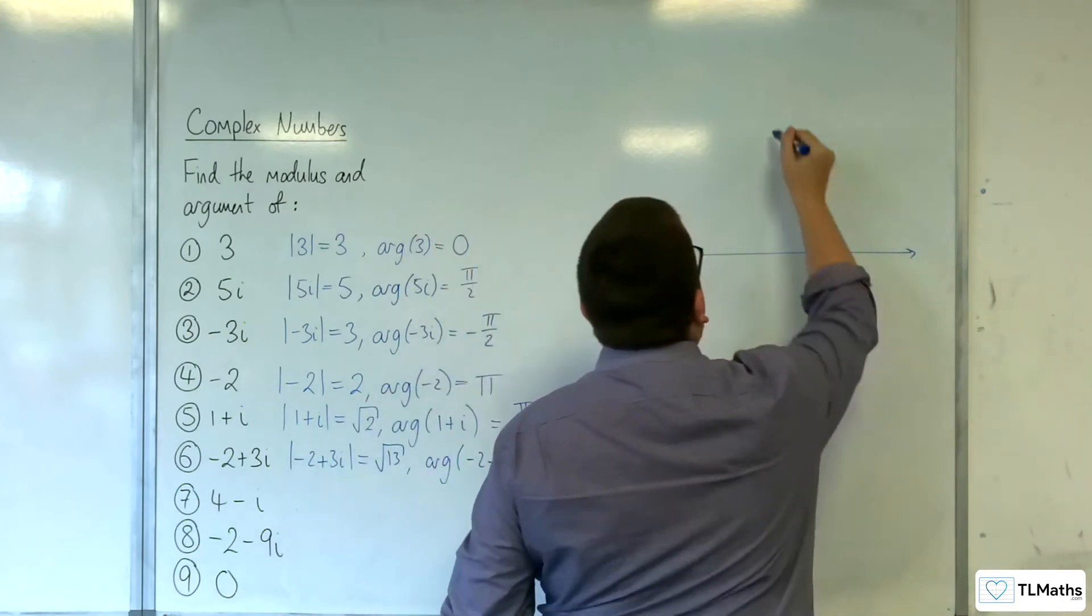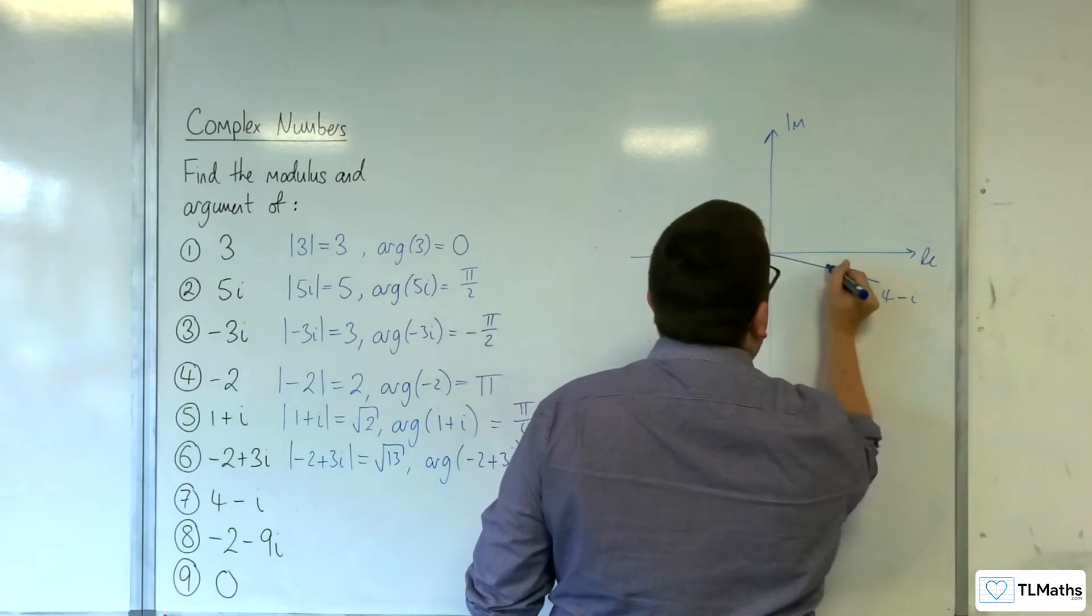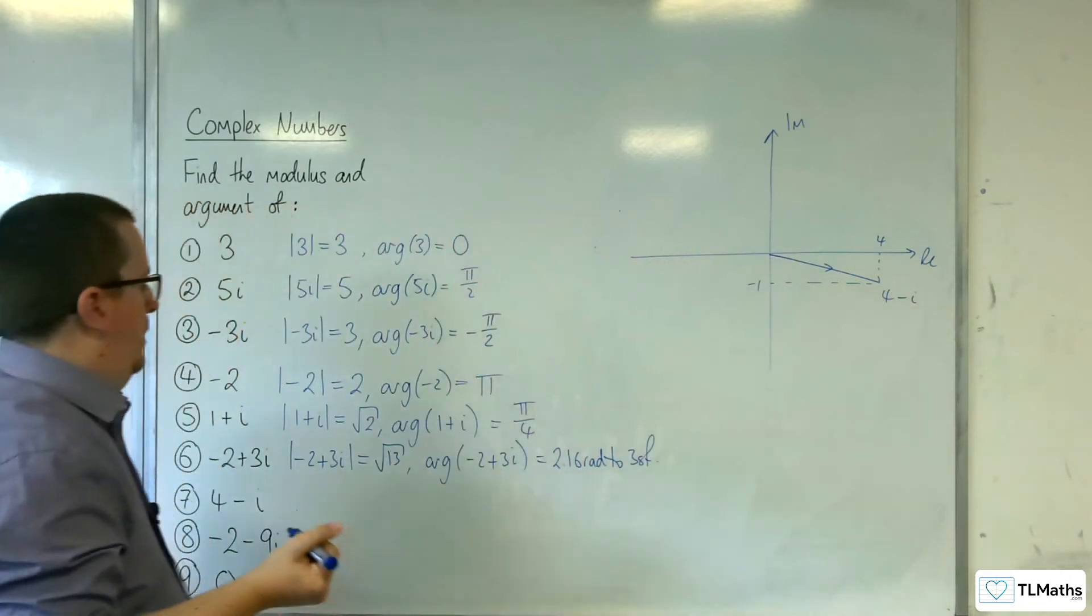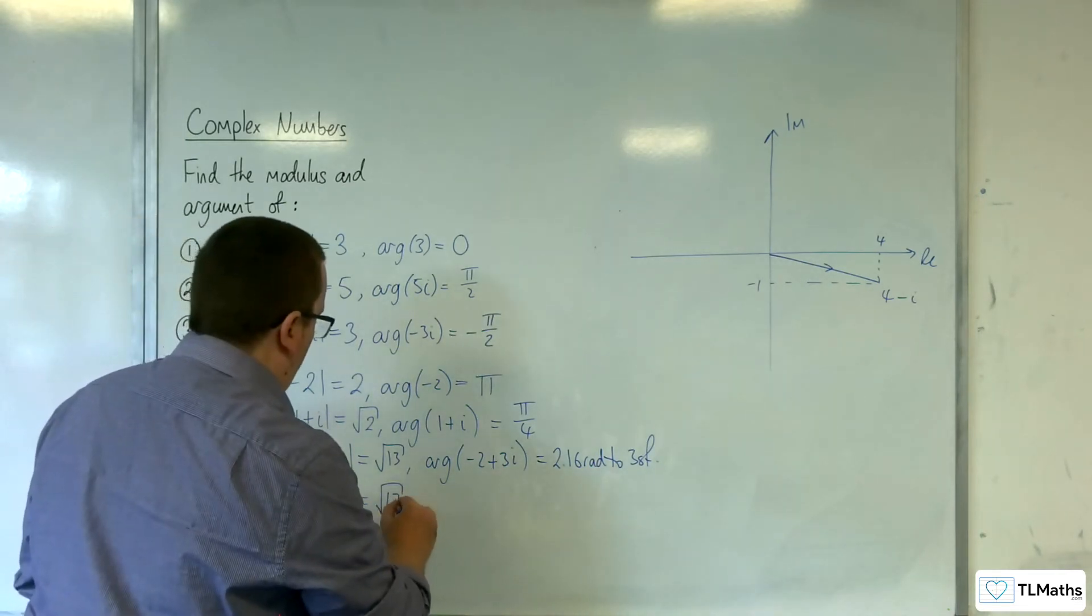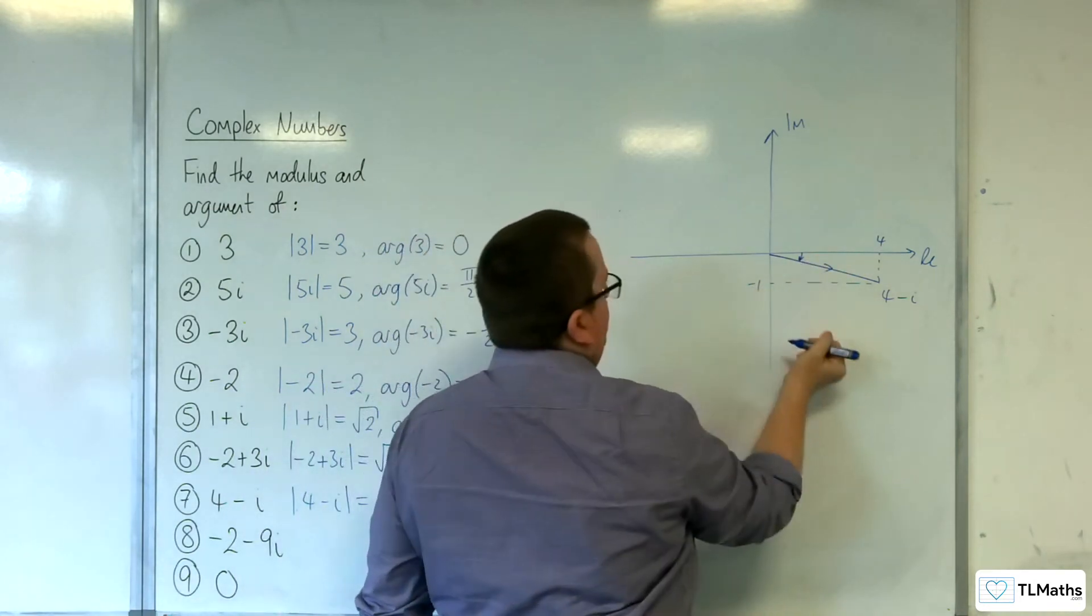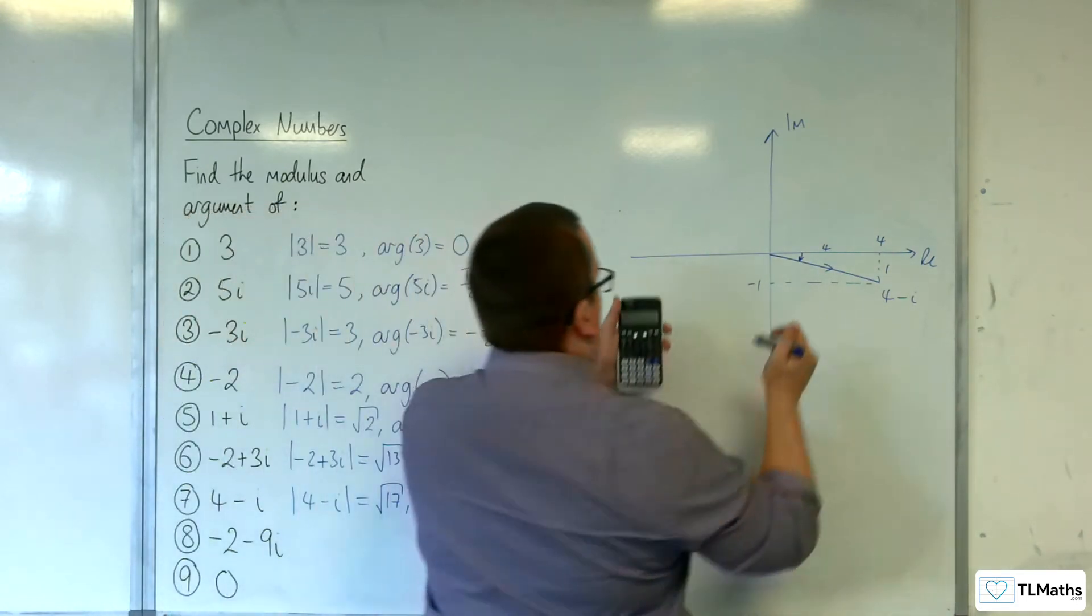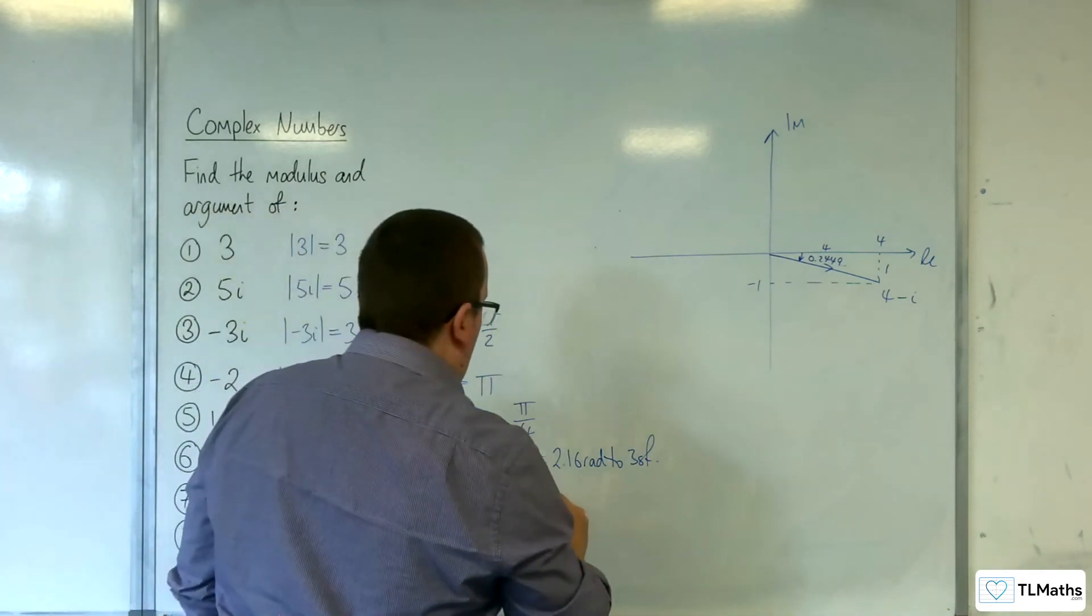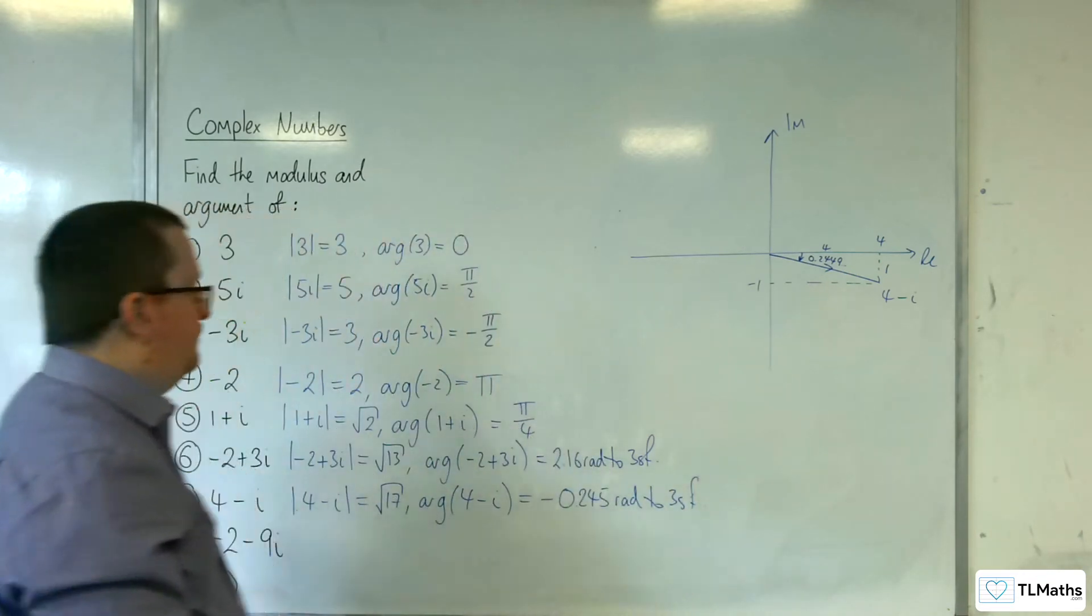Let's look at the next one. 4 - i. So 4 - i, something like this. So 4 minus 1. The length of that will be the square root of 4² + 1². So root 17. The argument is going to be this angle here. That's 1 and that's 4. So inverse tan of 1 over 4. 0.2449, etc. Because it's below the real axis, we're looking at -0.245 radians to 3 sig fig.